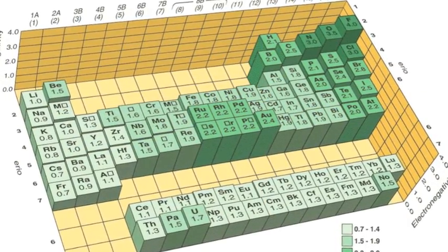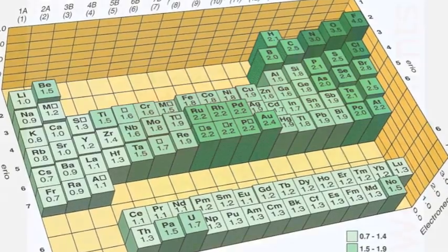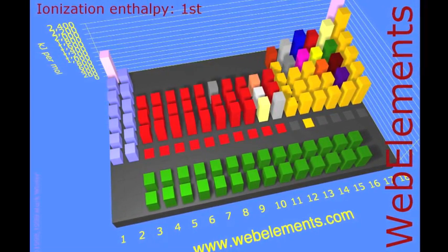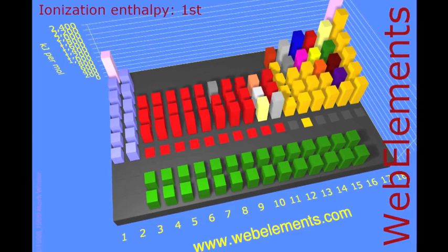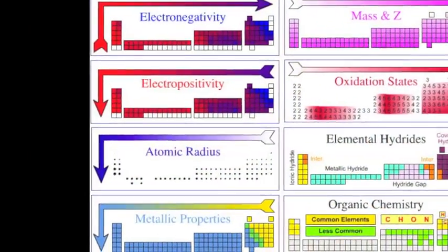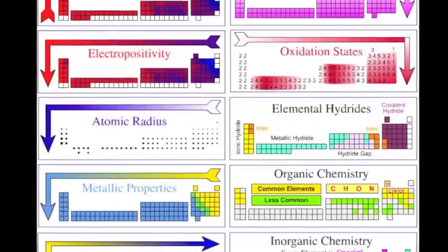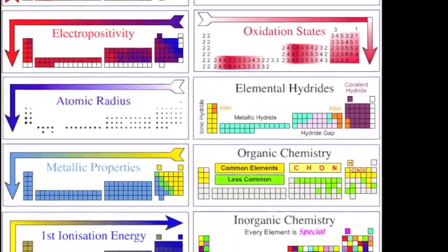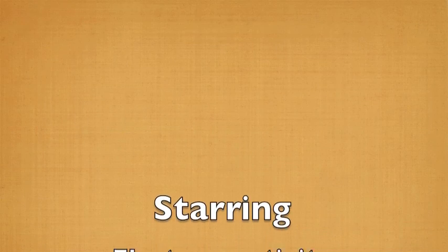Electronegativity: affinity for electrons. Ionization energy: energy to take electrons. These are two important trends. And now we've reached the end.